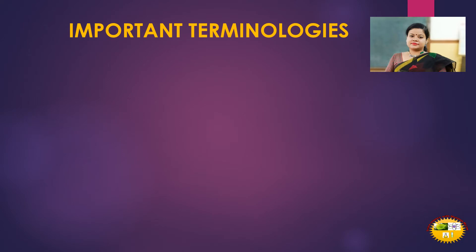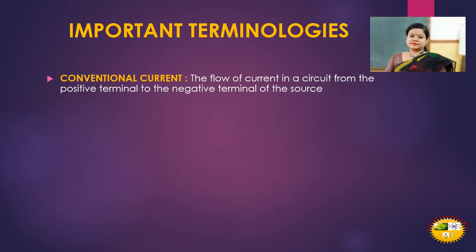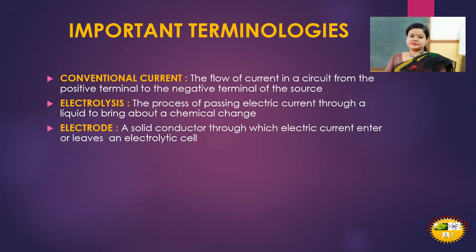Now we will learn some important terminologies. First, conventional current: the flow of current in a circuit from the positive terminal to the negative terminal of the source. Next, electrolysis: the process of passing electric current through a liquid to bring about a chemical change. An electrode is a solid conductor through which electric current enters or leaves an electrolytic cell.